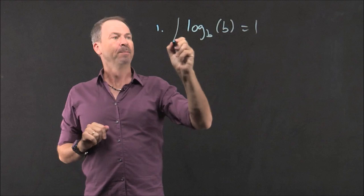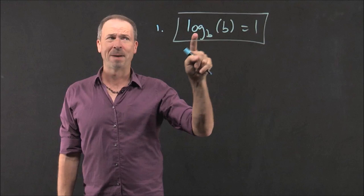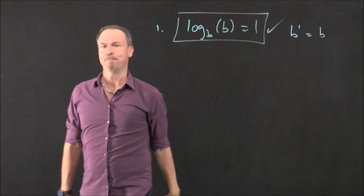Log base B of B is 1. All right. There's a property of logarithms. It actually makes perfectly good sense. Remember, change the word log to power. I'm asking, what's the power of B that gives the answer B? Well, what power of B gives me B? 1. B to the 1 gives B. Makes sense.